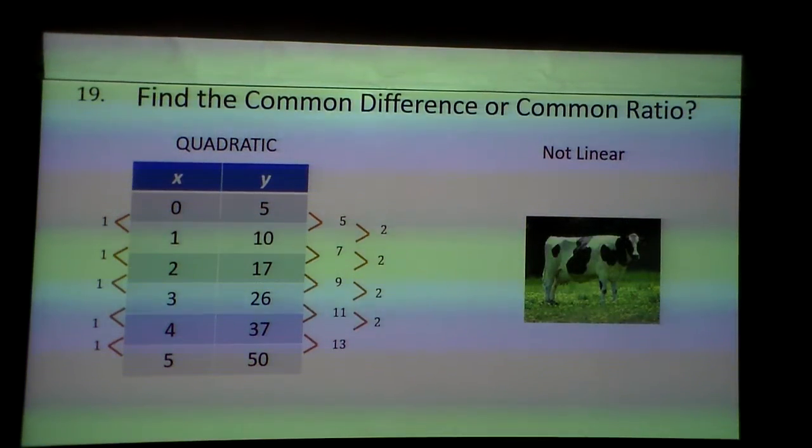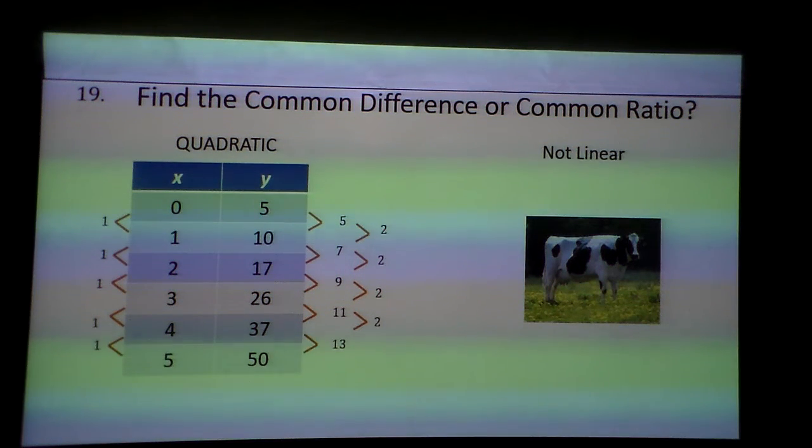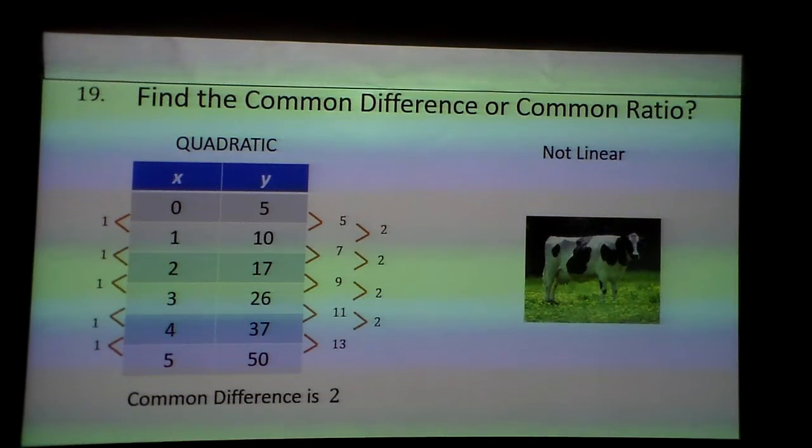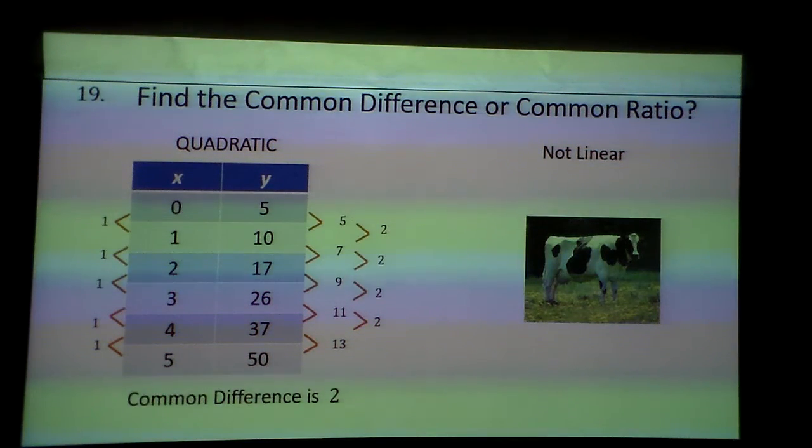It is quadratic because it was able to go to each one of those. The common difference is a 2.